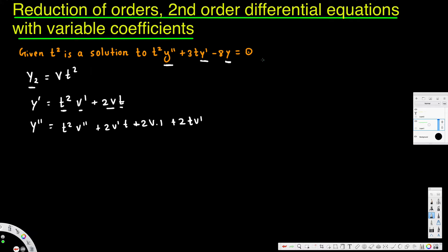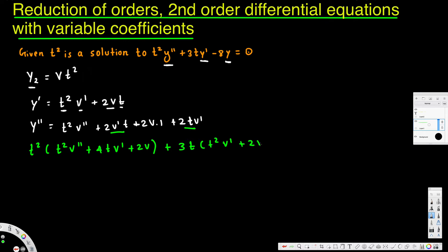After finding y double prime, we substitute everything into the differential equation. We have two like terms — 2v prime t and 2t v prime — which add together to give 4t v prime. Substituting into the equation gives t squared v double prime plus 4t v prime plus 2v. Next we multiply 3t by y prime, which is t squared v prime plus 2vt.